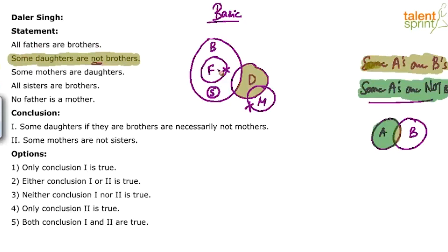Let me repeat the basic diagram: all fathers are brothers — all fathers are inside brothers. Some daughters are not brothers — those outside daughters are not brothers, though some may be. Some mothers are daughters — some of the mothers are daughters. All sisters are brothers — all sisters are inside the brothers circle. No father is a mother — fathers and mothers will not touch each other.